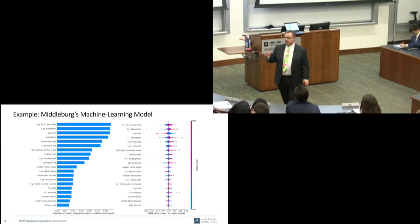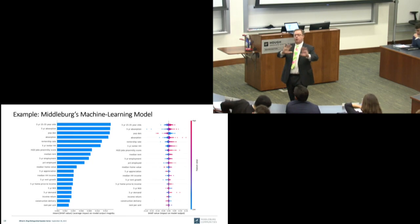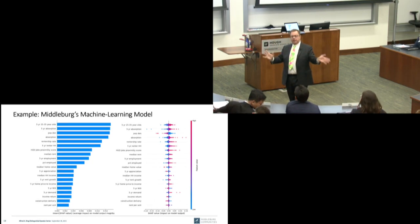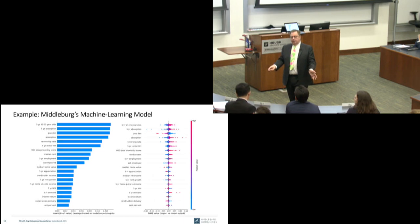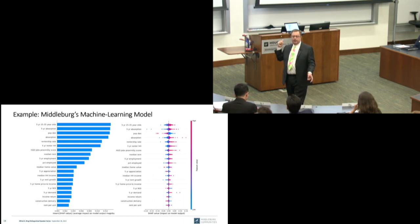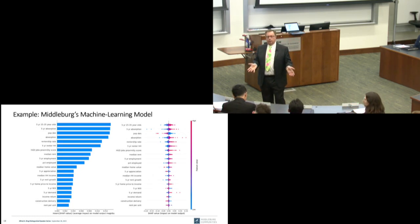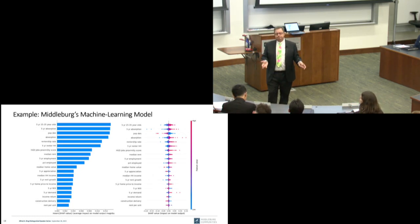This model is estimated across all markets simultaneously. Every block group has its own data — we're estimating this for 55,000 block groups — but it's the same model applied across all of them.